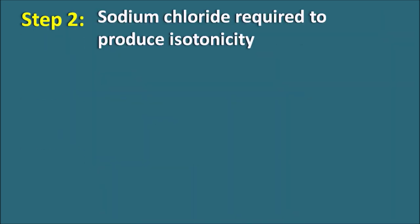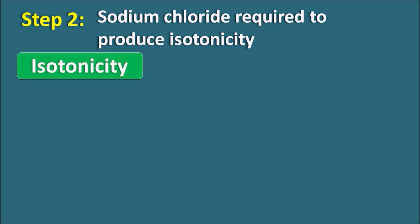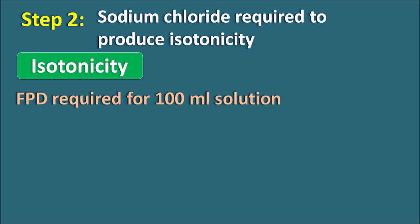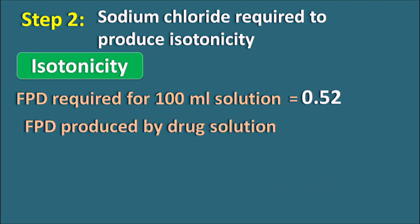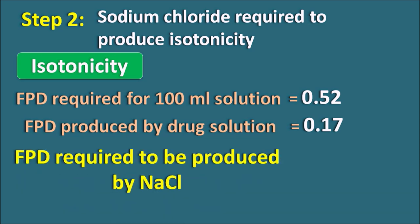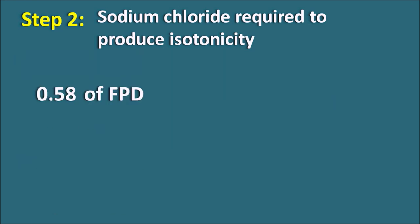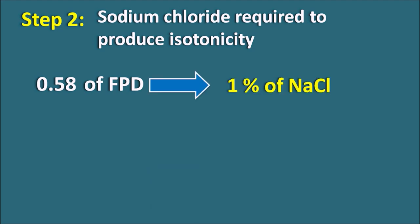Step 2: Sodium chloride required to produce isotonicity. For isotonicity, 0.9% sodium chloride is required, and 0.9% sodium chloride produces a freezing point depression of 0.52. So the freezing point depression required for 100 ml of solution is 0.52 to maintain isotonicity. The FPD already produced by the drug solution is 0.17 (calculated in Step 1). Therefore, the freezing point depression still required from sodium chloride = 0.52 − 0.17 = 0.35... which gives 0.37. We must add sodium chloride to produce a FPD of 0.37.